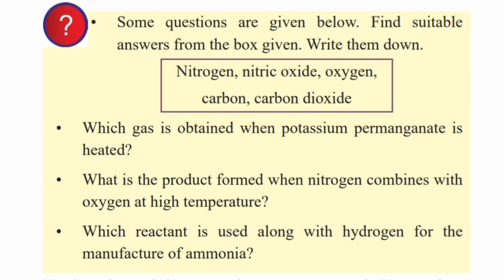Which gas is obtained when potassium permanganate is heated? Oxygen. What is the product formed when nitrogen combines with oxygen at high temperature? This is nitric oxide. Which reactant is used along with hydrogen for the manufacture of ammonia? Nitrogen and hydrogen — the answer is nitrogen.